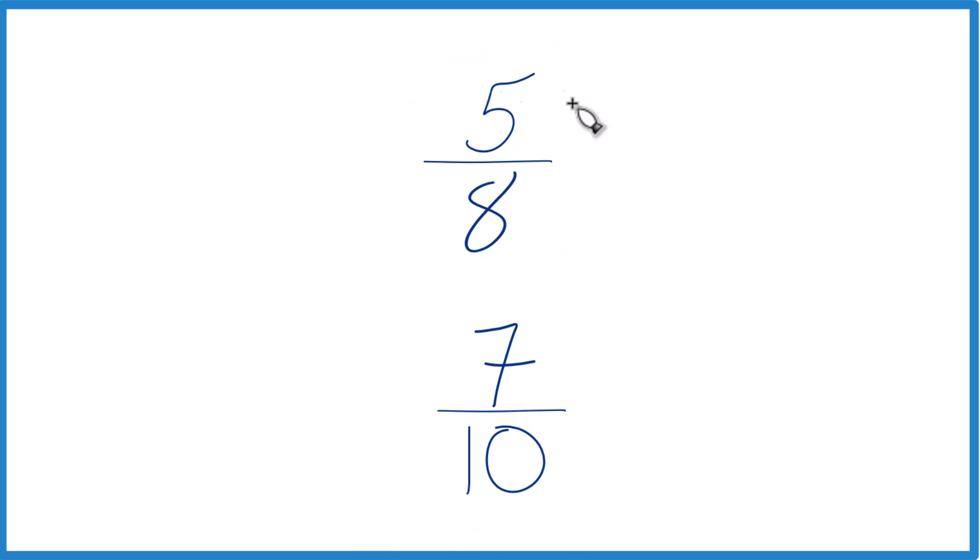You could just take a calculator, divide 5 by 8, get a decimal, 7 by 10, get a decimal, and compare those. See whether 5 eighths is greater than or less than 7 tenths.